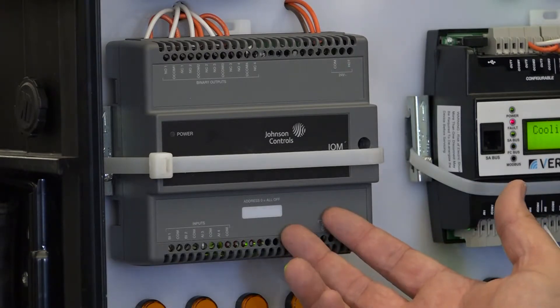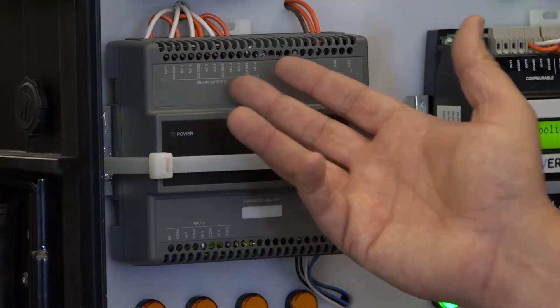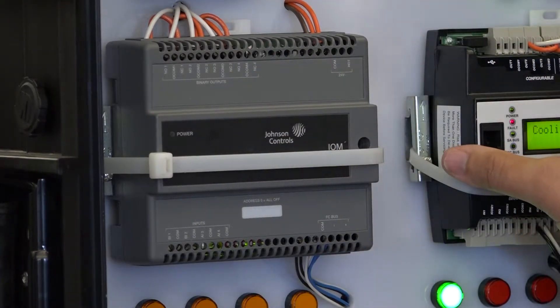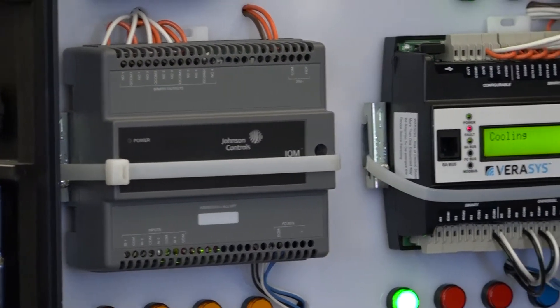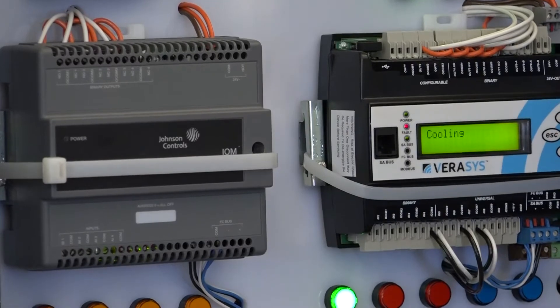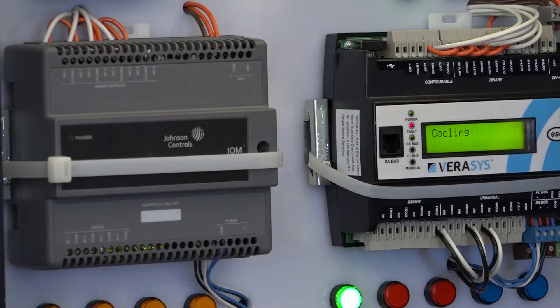We can also use it to turn on other outputs when a schedule in another device is occupied. For instance, with a rooftop unit or single zone unit, when that's occupied you can turn on an exhaust fan or toilet exhaust fan. We can do those types of interlocks as well.